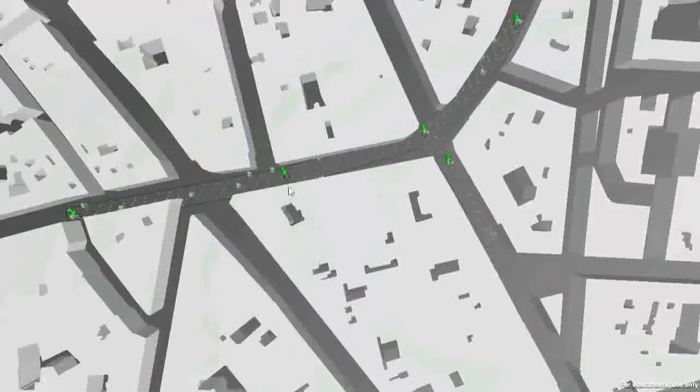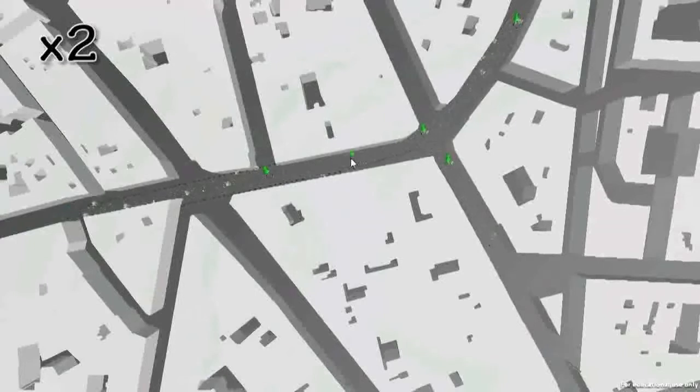This example demonstrates the interactive creation of a crowd given an existing topology of an urban environment. Within minutes, the user is able to create a complex crowd motion with multiple intersections.